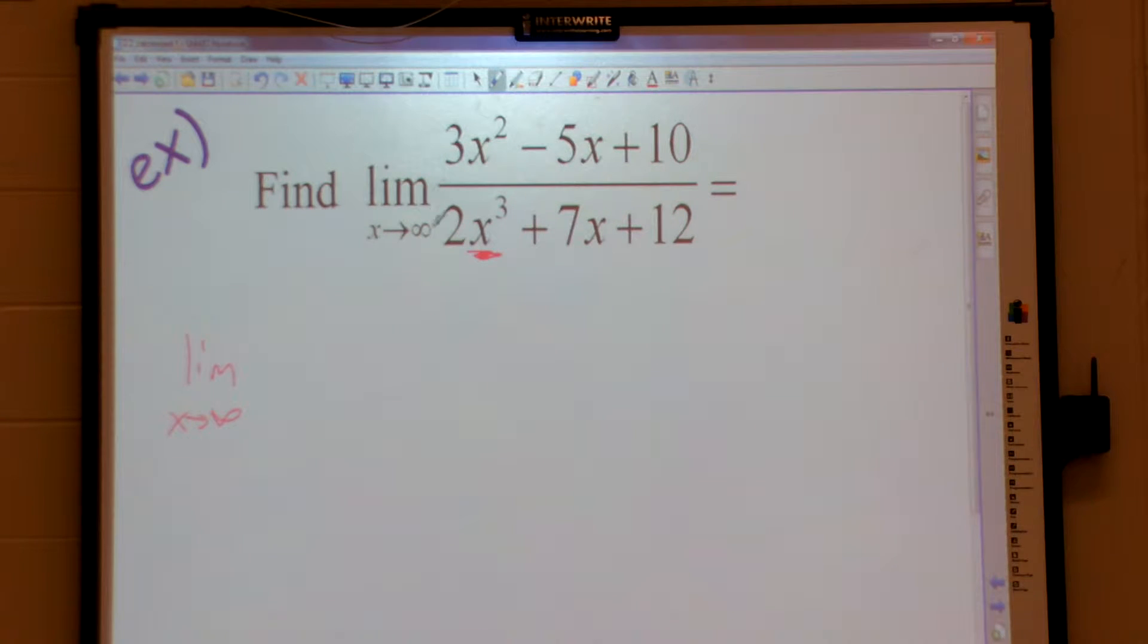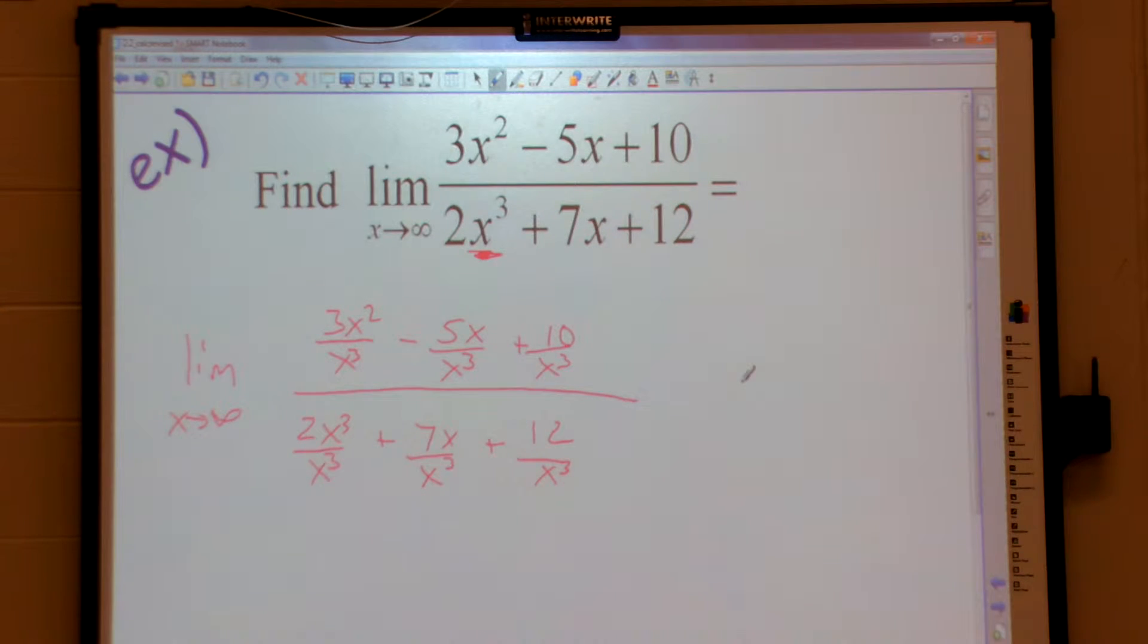So I'm going to have 3x squared over x cubed, minus 5x over x cubed, plus 10 over x cubed. All over 2x cubed over x cubed, plus 7x over x cubed, plus 12 over x cubed. Everything is divided by x cubed.